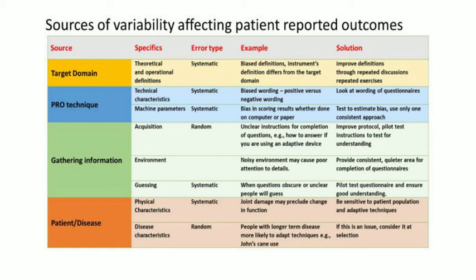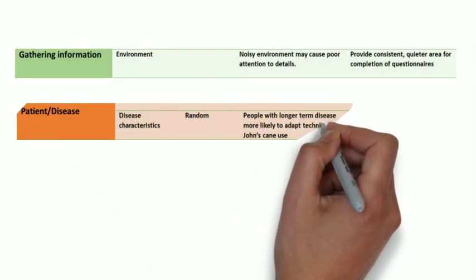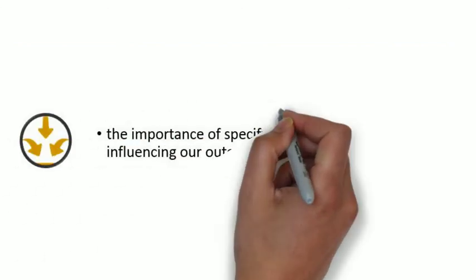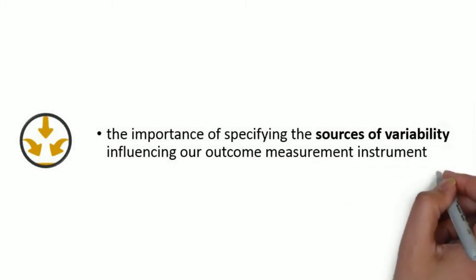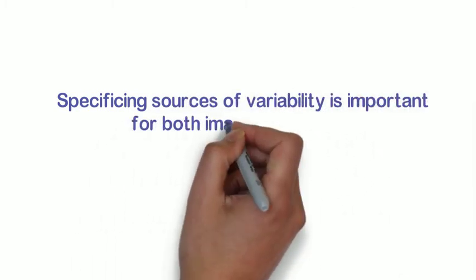So in this whiteboard, we have talked about the importance of specifying the sources of variability that can influence the scores that we obtain on our outcome measurement instruments. We learned lessons by looking at imaging outcomes, but these actually apply equally well to patient-reported outcome instruments as well.